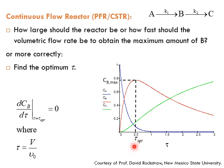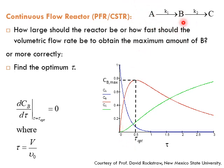If tau is very large, the molecules of B stay long enough that B starts converting to C. If tau is very small, the residence time is low and there is not enough time to convert a sufficient amount of A to product B. Therefore, both small tau and large tau are undesirable — there exists an optimum tau. This concludes the first segment.